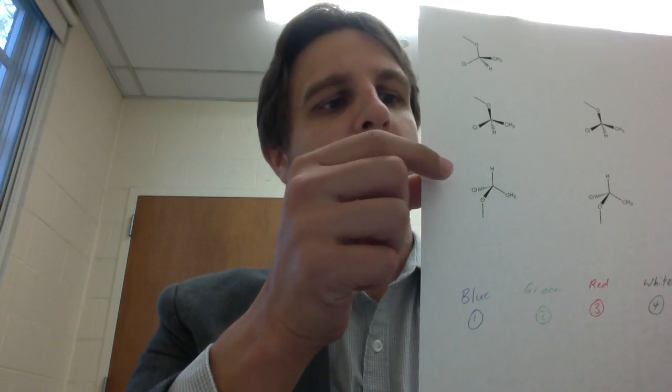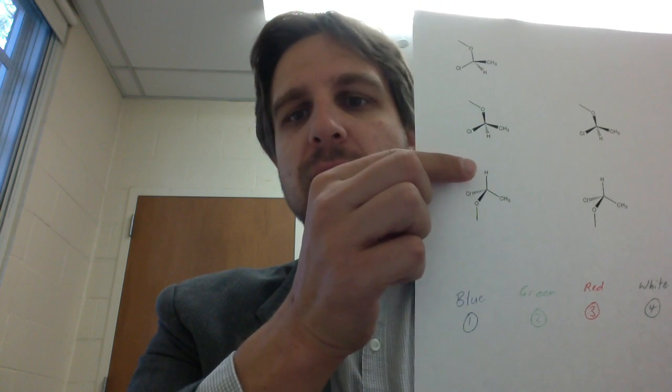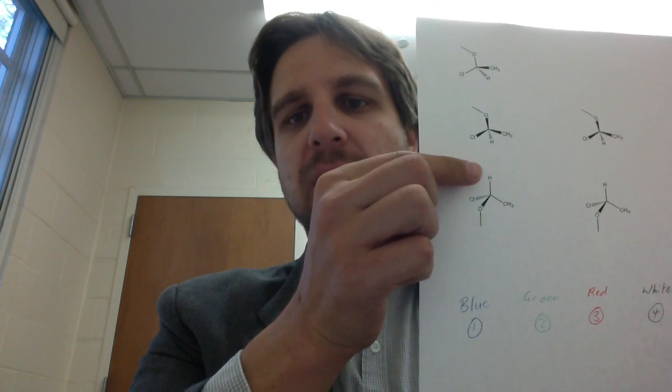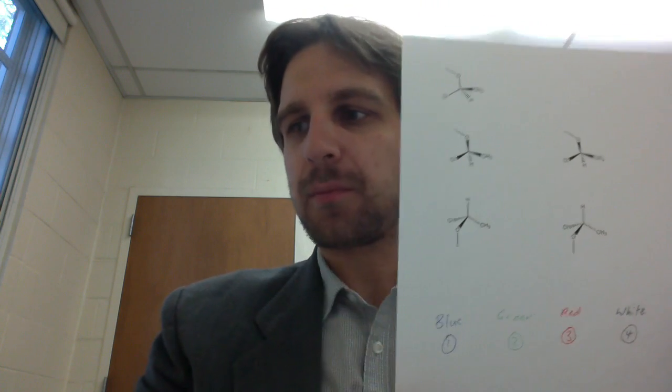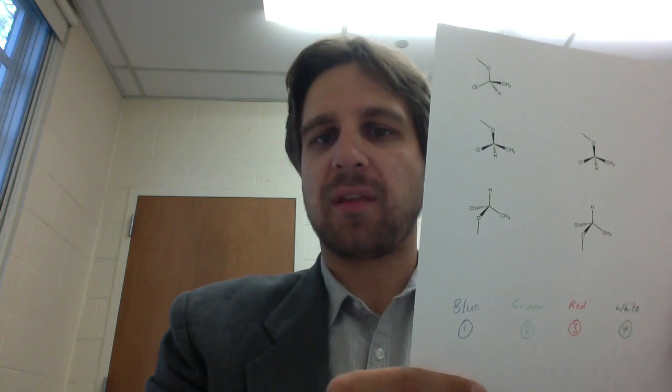It's very difficult to do when the lowest priority group is, for instance, along the plane of the page, like this H here. So I'll be showing you a method for which you can always apply using simply your hands here. One of these hands will be the S enantiomer, one of these hands will define the R enantiomer.